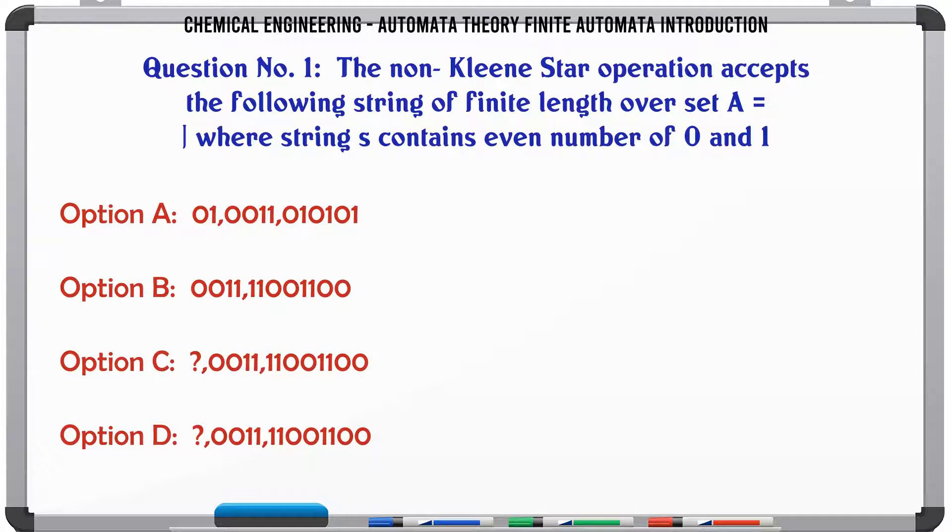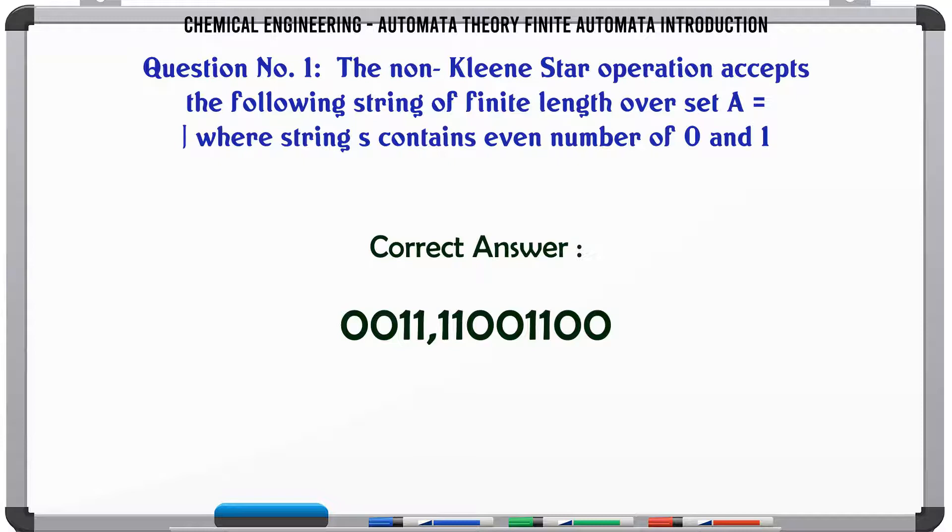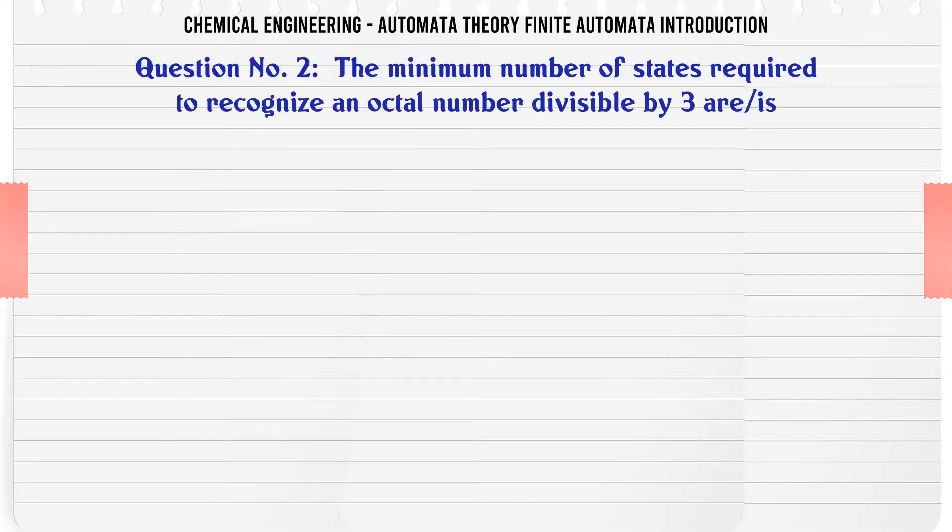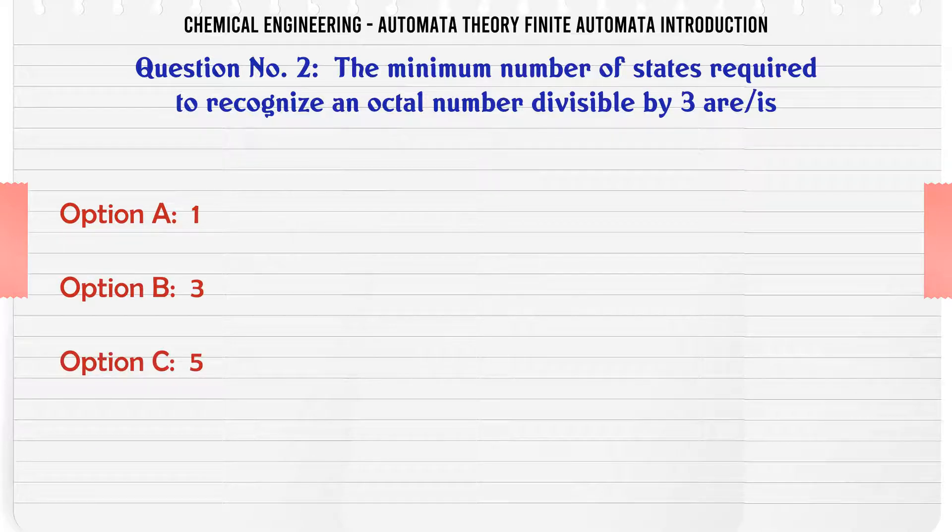Option D: 0011, 11001100. The correct answer is 0011, 11001100. The minimum number of states required to recognize an octal number divisible by 3 are: A: 1, B: 3, C: 5, D: 7. The correct answer is 3.